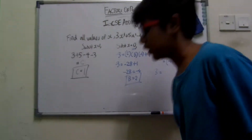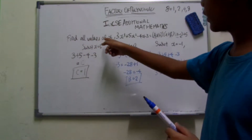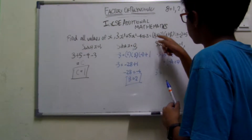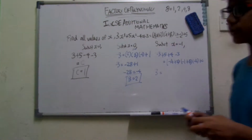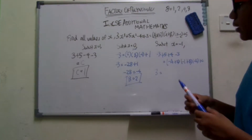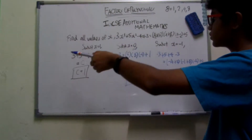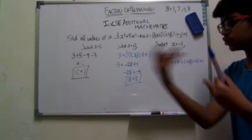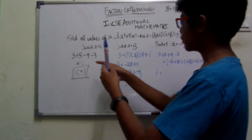This is the second part. We have the equation: find all values of x — 3x cubed plus 5x squared minus 4x minus 3 equals (x plus 2)(x plus b)(x minus 1) plus c. This is a typical question you'll see in exam papers. The values of x that we try are x equals 1, x equals 0, and x equals negative 1. I'll teach you in the next video how to retrieve these values.